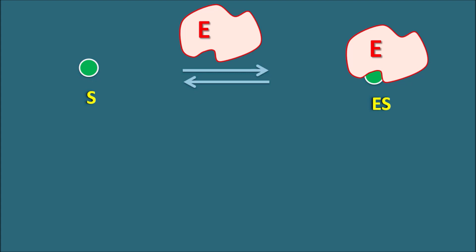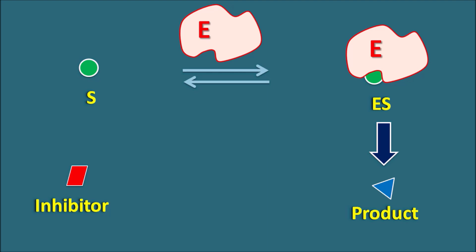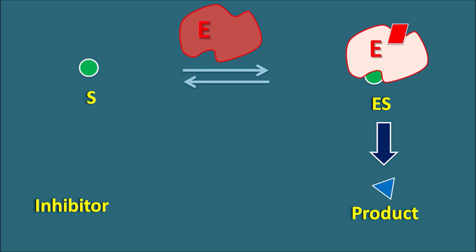When this enzyme-substrate complex forms, it can be converted into products along with the release of the free enzyme. Now there are types of compounds called inhibitors. These inhibitors can inhibit the conversion of substrate to product through the enzymatic reactions. They can bind to the free enzyme at the active site, thereby inhibiting enzymatic activity and preventing interaction of the substrate towards the enzyme. Otherwise, these inhibitors can also bind to the enzyme-substrate complex, preventing it from being converted into products. Inhibitors can bind to either free enzyme, enzyme-substrate complex, or both, based on the type of enzyme inhibition.